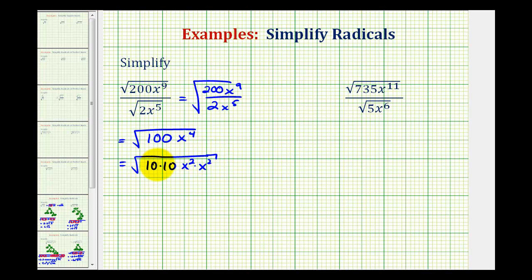So because we have a square root, if we circle pairs of equal factors, this is a perfect square factor, this is a perfect square factor, and so is this.